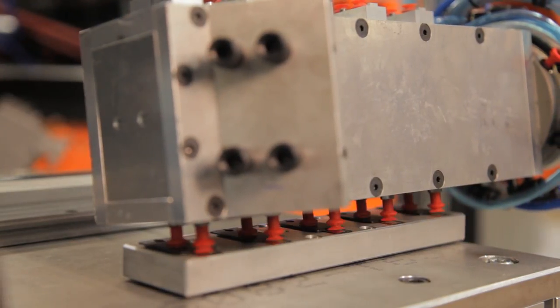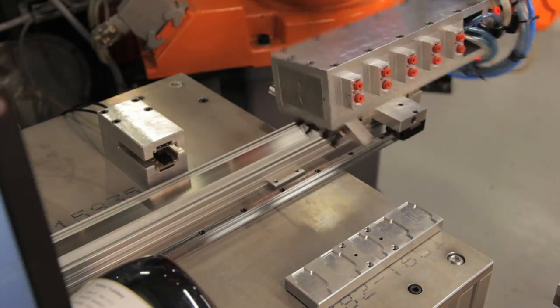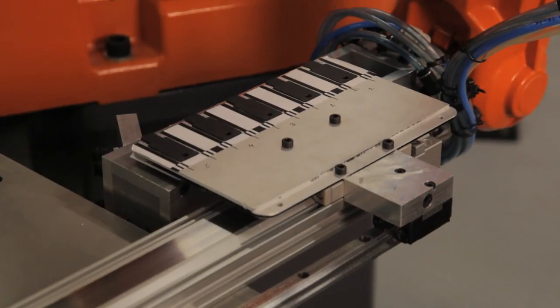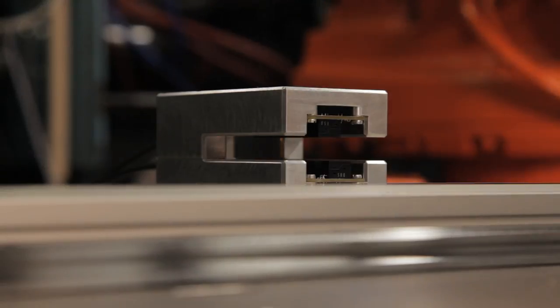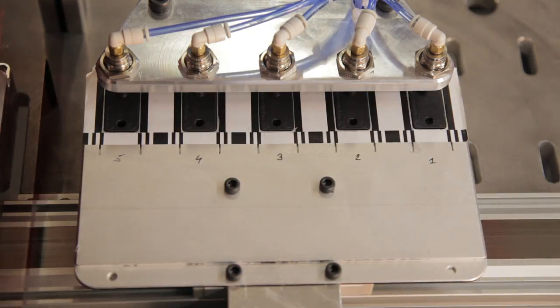From the injection molding, the robot brings the YubiKeys to the test and configuration station. Depending on customer needs, cryptographic information can be configured at this stage.